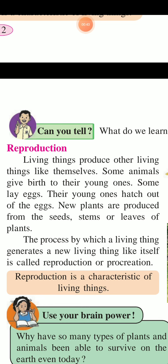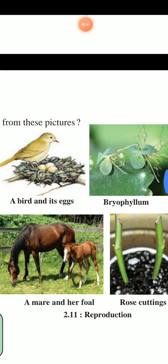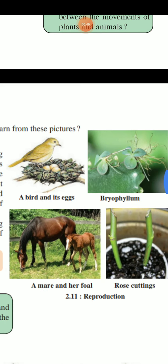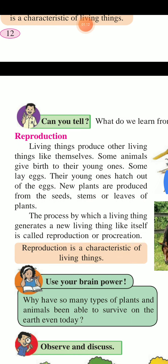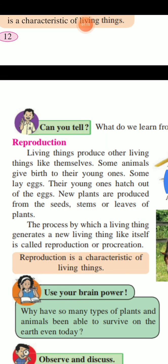You observe this picture. What do you learn from this picture? There are 4 pictures given. First, a bird and its eggs. Second is the brine of Lillium. The next picture shows a plant and a rose cutting. Living things produce other living things like themselves. Some animals give birth to their young ones; some lay eggs, and their young ones hatch out of the eggs. New plants are produced from the seed, stem, or leaves of a plant.